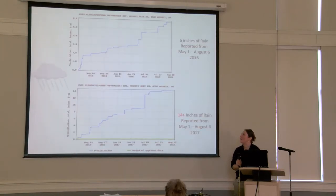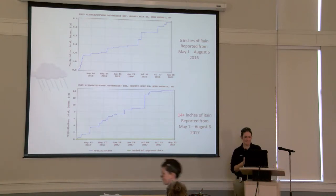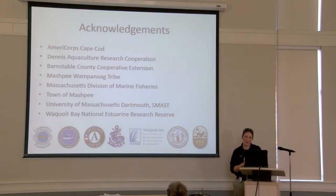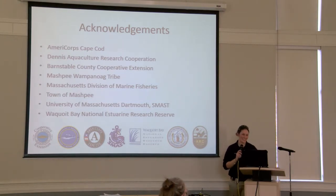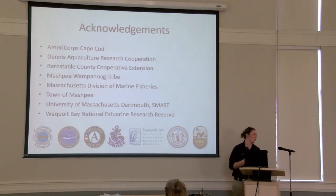We had six inches of rain in 2016 and in 2017 we had 14 inches within a couple of months. We'd like to thank AmeriCorps Cod, the Dennis Aquaculture Facility that gives us our seed every year, the Barnesville Cooperative Extension, the Mashpee Wampanoag Tribe, UMass Dartmouth, the Town of Mashpee, and the McCoy Bay National Wildlife Refuge.